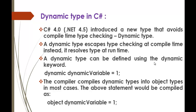Dynamic type was introduced in C Sharp version 4 with .NET version 4.5. The major thing about dynamic type is it avoids compile time checking. A dynamic type escapes type checking at compile time; instead it resolves the type at runtime. It is not going to check the type of the variable at compile time, instead it resolves the type of that variable at runtime itself. That is the specialty of the dynamic type.